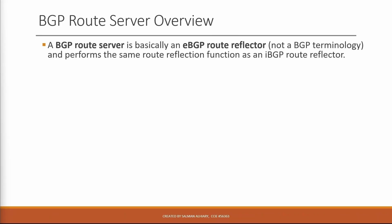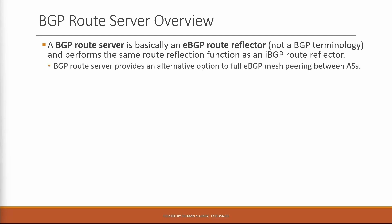A BGP route server is basically an eBGP route reflector. There is no such terminology in BGP, but it performs the same route reflection function as an iBGP route reflector. BGP route server provides an alternative option to full eBGP mesh peering between autonomous systems.